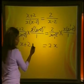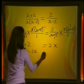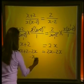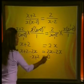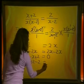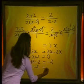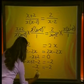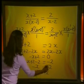I will subtract 2x from both sides. I get x + 2 - 2x = 2x - 2x. This simplifies to -x + 2 = 0. Now I subtract 2 from both sides and get -x = -2. We are solving for positive 1x, so dividing by -1 on both sides gives x = 2.